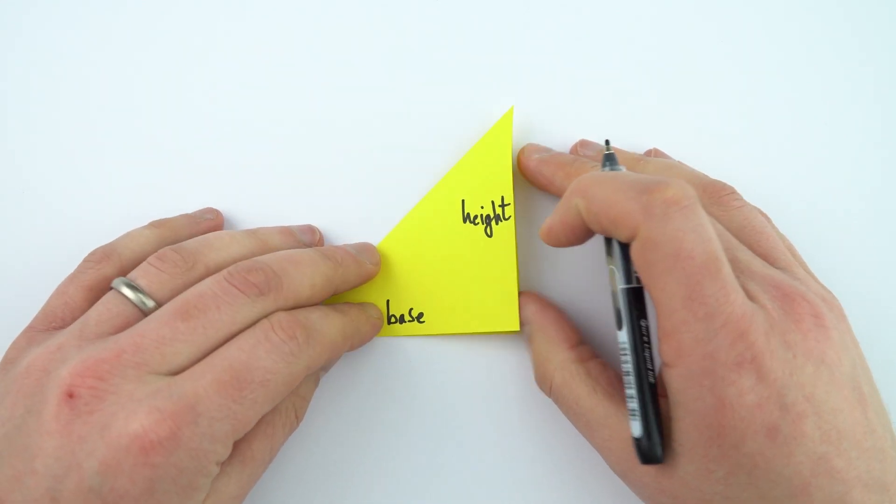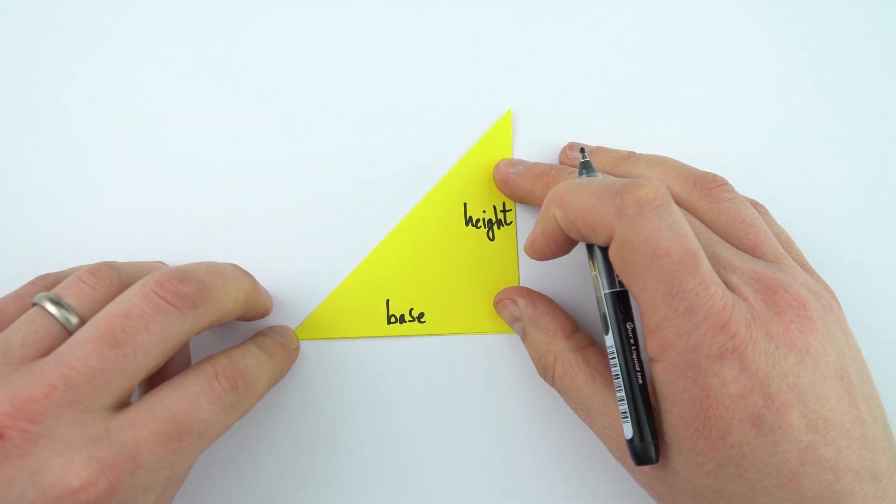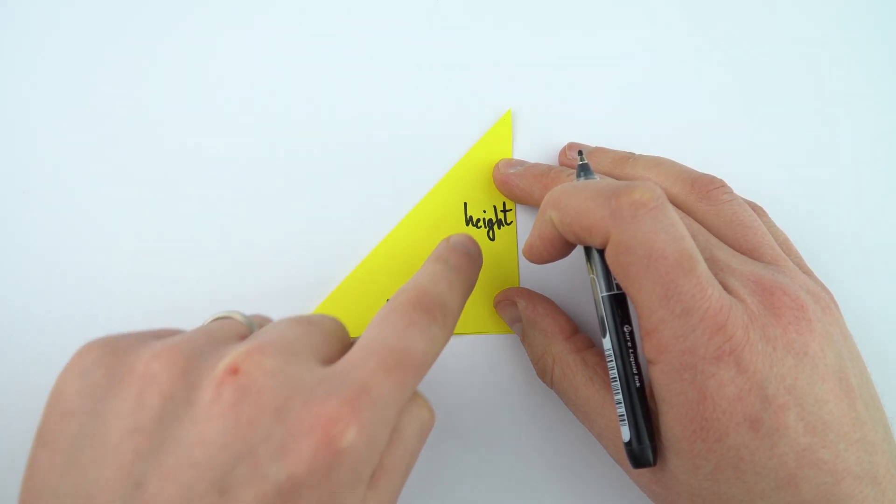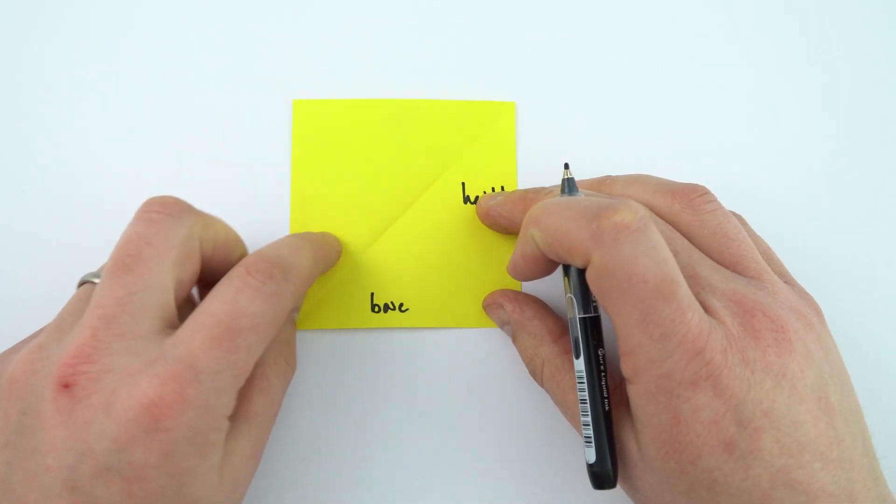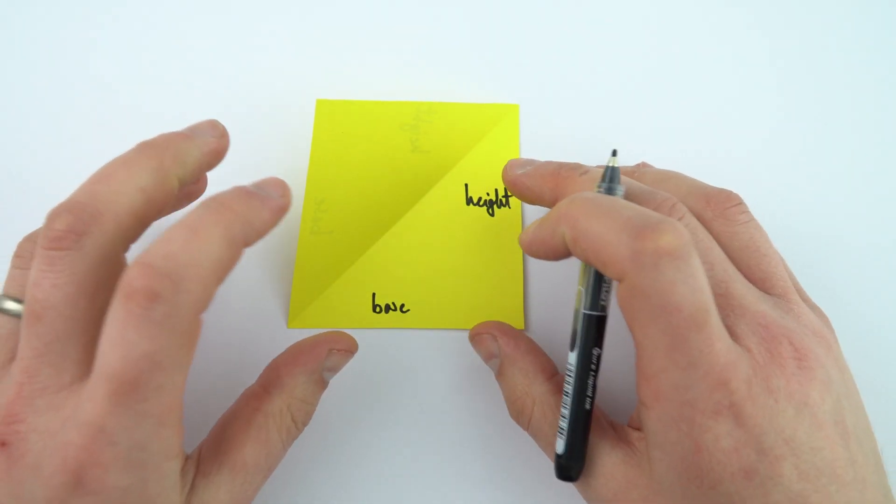But sometimes we also want to look at the area of a triangle, and this is going to be half times the base times the height, because this triangle is going to be equal to half the area of this rectangle. And that's something which is really important to remember.